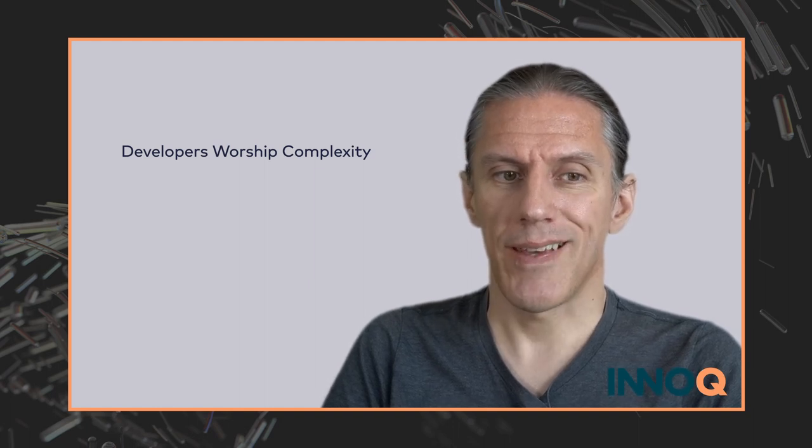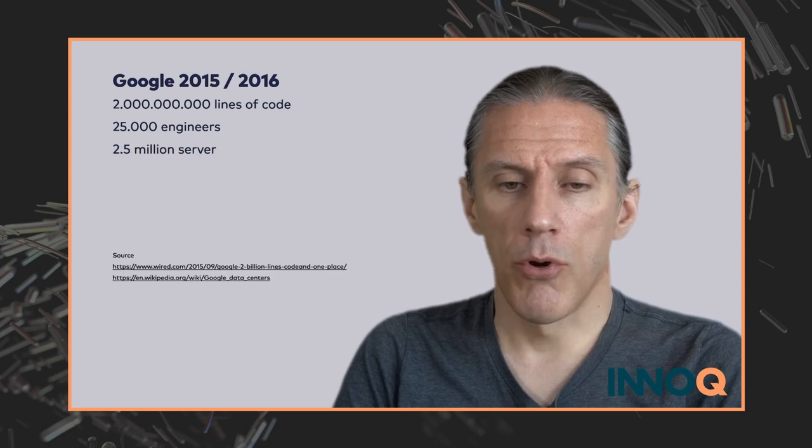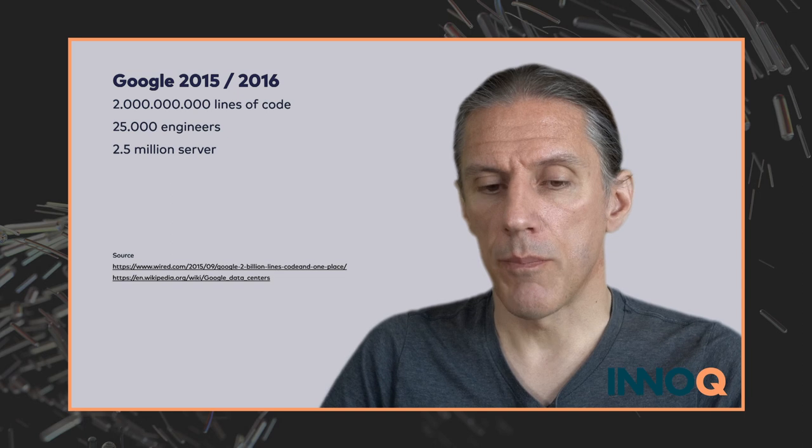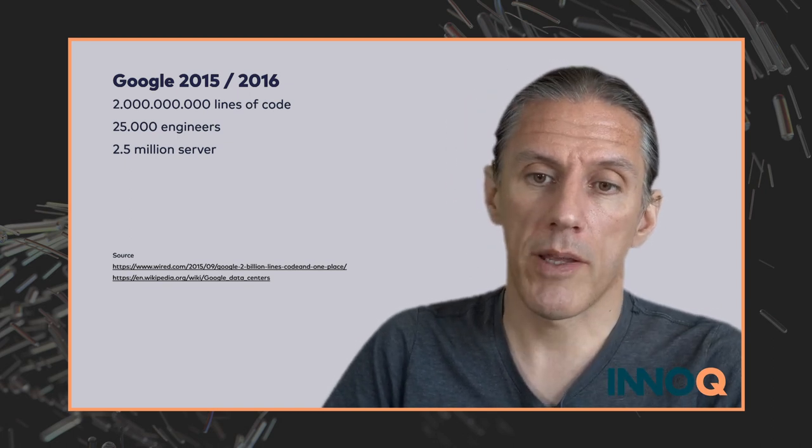Let me give you a thought experiment. My recommendation for a customer was to use continuous delivery and cloud. The customer said it won't work here. I said it works at Google and Amazon, so why wouldn't it work at your place? The person said maybe it works for Google and Amazon, but our system is more complex. So let's look at the numbers. In 2015–2016, Google had two billion lines of code, about 25,000 engineers on the payroll, and 2.5 million servers. I would be pretty surprised if what these people were working on was less complex than that customer's system.